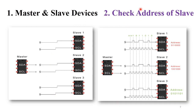The next step is checking the address of the slave. The master wants to send data to slave three only, but there are three slaves present. The master sends the address — for example, 1 1 1 0 1 0 — to identify the target slave. This address matches slave three, so slave three receives it, and slave one and slave two are disconnected from the master.